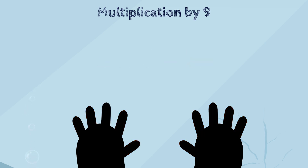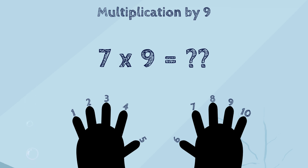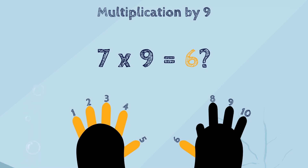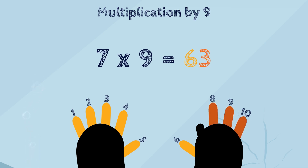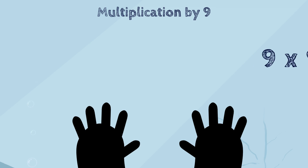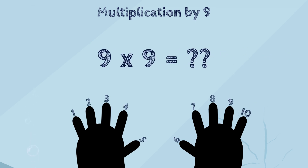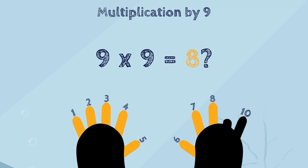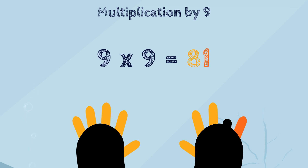Now, let's multiply seven by nine. To do this, we'll fold down the seventh finger. Now we have six unfolded fingers to the left and three unfolded fingers to the right. So, the answer to seven times nine is sixty-three. Let's try another example: nine multiplied by nine. We fold down the ninth finger and count the fingers to the left and then to the right of the folded finger — eight fingers to the left and one to the right. So, the answer is eighty-one.